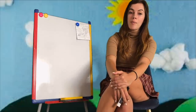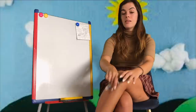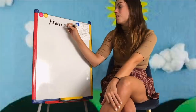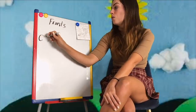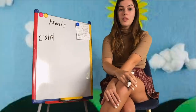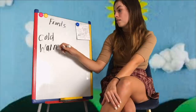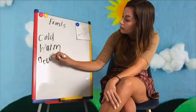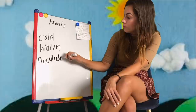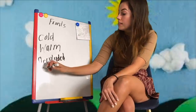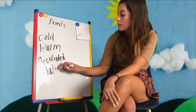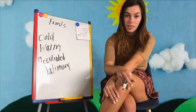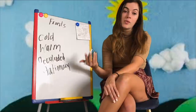There are four types of fronts: a cold front, a warm front, an occluded front, and a stationary front. Each kind can bring different kinds of weather, and these four types are going to affect the weather.